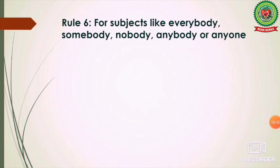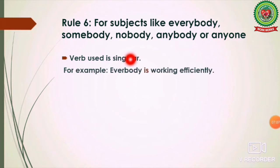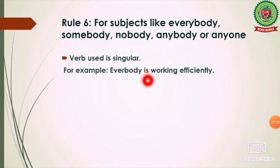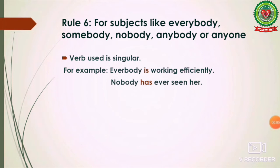The next rule: subjects like 'everybody,' 'somebody,' 'nobody,' 'anybody,' or 'anyone' are all treated as singular subjects, and a singular verb is always used with them. For example: 'Everybody is working efficiently.' We never say 'everybody are working efficiently' because 'everybody' is a singular subject — we use the singular verb 'is.' Another example: 'Nobody has ever seen her.' 'Nobody' is a singular subject, so we use 'has,' not 'have.'